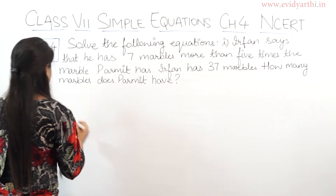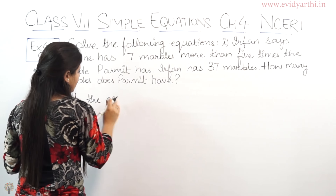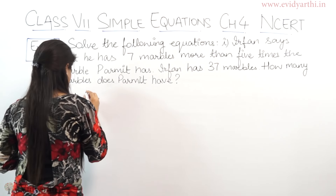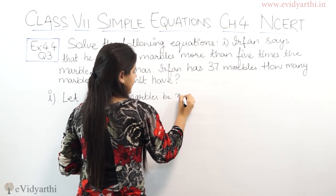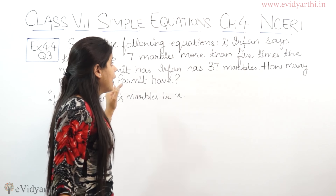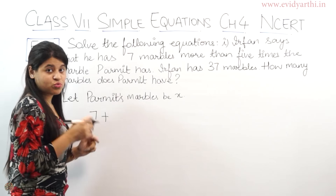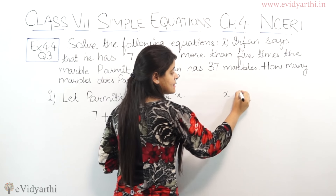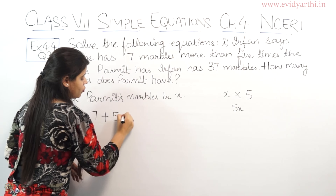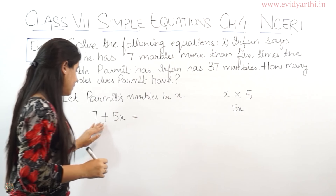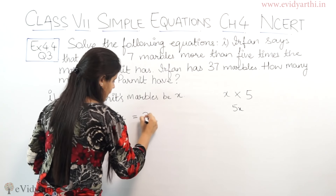Let's start. This is the first part. Let Parmit's marbles be x. Now, Irfan says that he has 7 more than 5 times the marbles Parmit has. So that is 5x plus 7. This equals to Irfan's marbles, which is given as 37. So this will be 37.